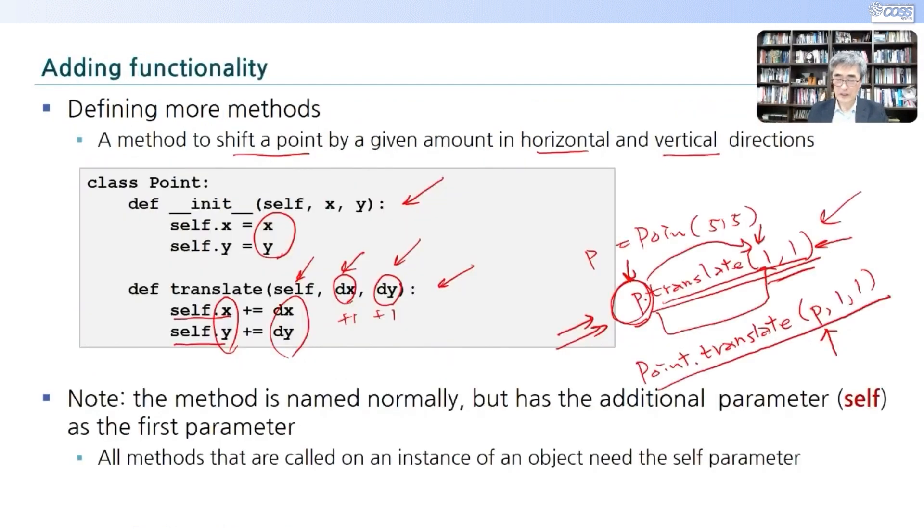근데 우리가 여기서 요 P를 요 앞에다 붙이고 요기다는 생략을 하는 겁니다. 근데 이 파이썬 컴파일러가 여러분들이 요렇게 코딩하면 요 P를 요기다가 옮겨서 요 function을 부르는 거죠. 별거 아닙니다. 이게 훨씬 더 간략하게 표시할 수 있는 object oriented program 다운 프로그램이죠.